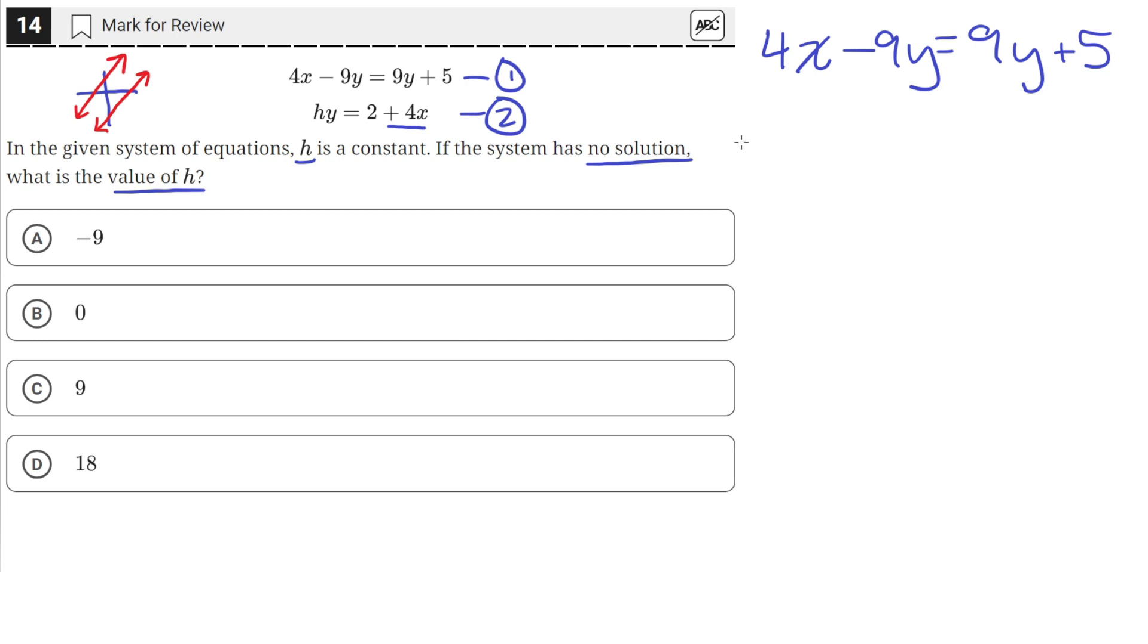So this way we'll have a negative 4x on this side, and a positive hy, which will equal just 2, since we subtracted a 4x from both sides.